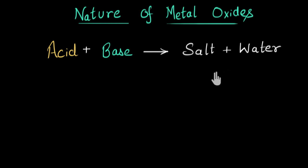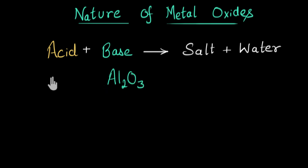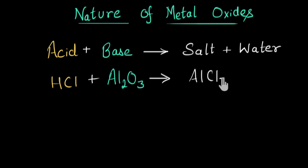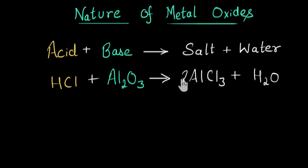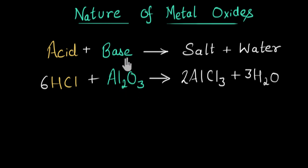Let's look at an example. The first example is aluminum oxide, Al₂O₃. Let me show you how it behaves as a base. Al₂O₃ reacted with HCl (hydrochloric acid) gives us aluminum chloride, AlCl₃, which is a salt, plus water, H₂O. Balancing: two aluminum means two AlCl₃, which needs six chlorine, so six HCl, giving six hydrogen and three water molecules, and three oxygen. This is balanced. So here aluminum oxide is acting as a base because it reacts with acid HCl to give salt and water.